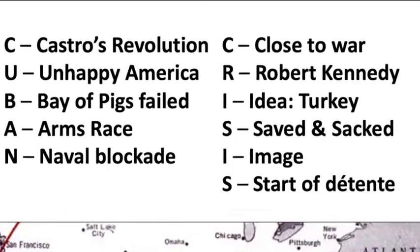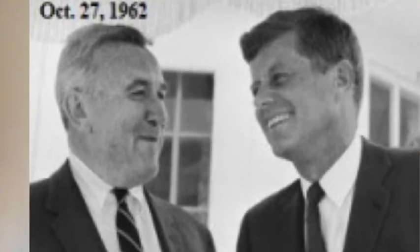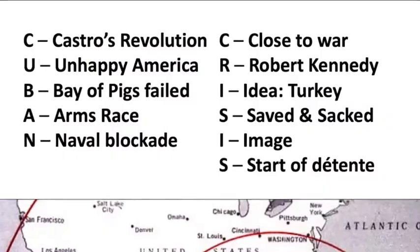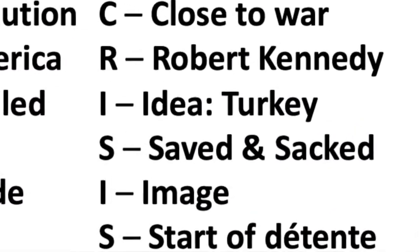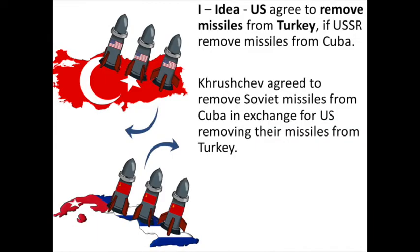JFK goes on television to tell the American public and the wider world what's happening. But behind the scenes, his brother Robert Kennedy — our R of crisis — begins to negotiate with Soviet ambassador Anatoly Dobrynin. Their idea — the I of crisis — is to remove US missiles from Turkey. Turkey is close to the Soviet Union and America had missiles there, which obviously upset the Soviets. So the compromise is that America will remove its missiles from Turkey in exchange for the Soviet Union removing its nuclear missiles from Cuba.